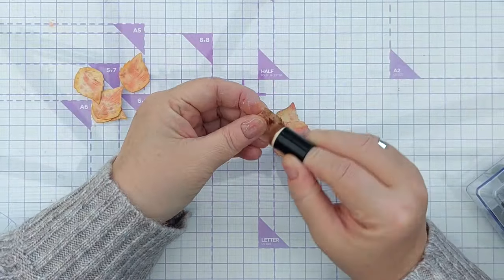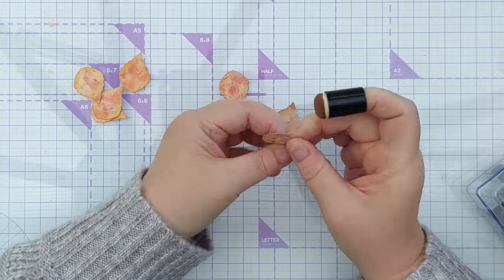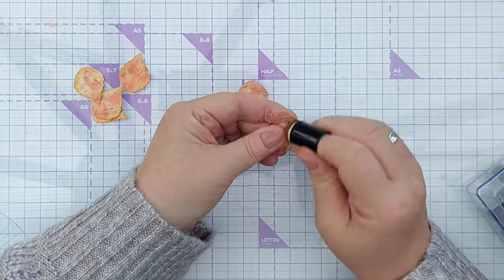Once those were dry, I inked the edges again just to bring out the definition, so I used the same spiced marmalade and vintage photo.